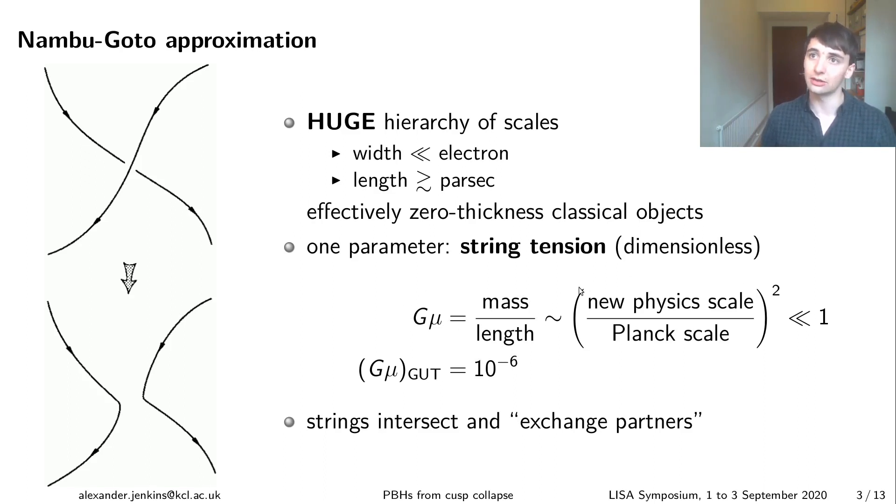But with cosmic strings there's a very nice property that this is intimately linked to the scale at which the strings were formed. So this Gμ goes like the new physics scale over the Planck scale squared. People were initially interested in the strings formed at the grand unified theory scale, the GUT scale, which gives you Gμ of about 10^-6, although this is now ruled out by observations and I'll talk about that in a couple of slides.